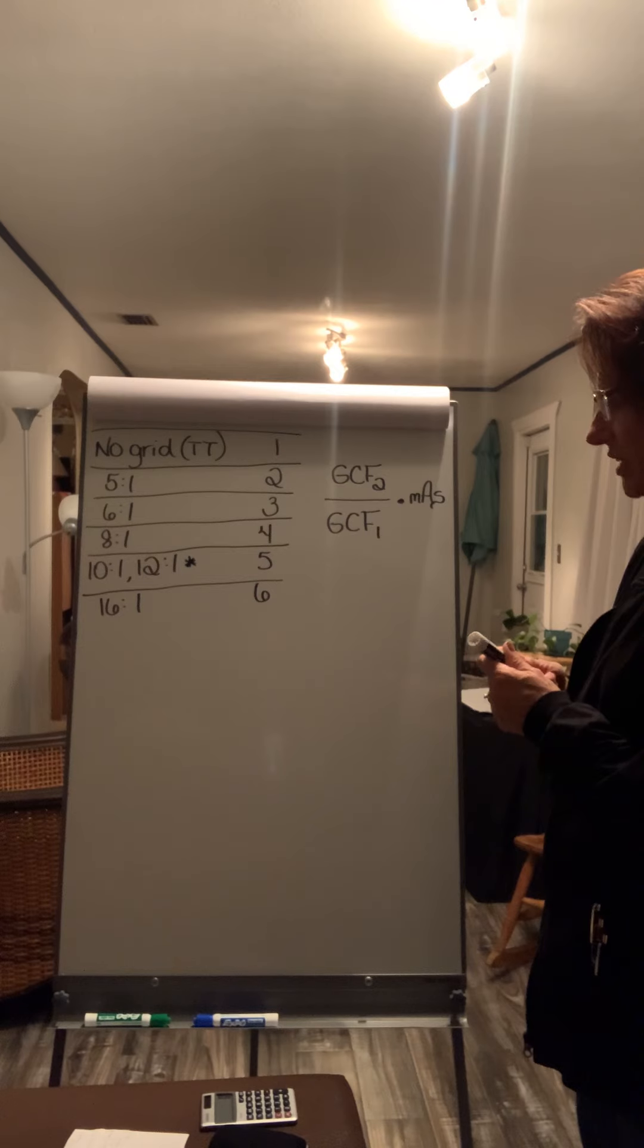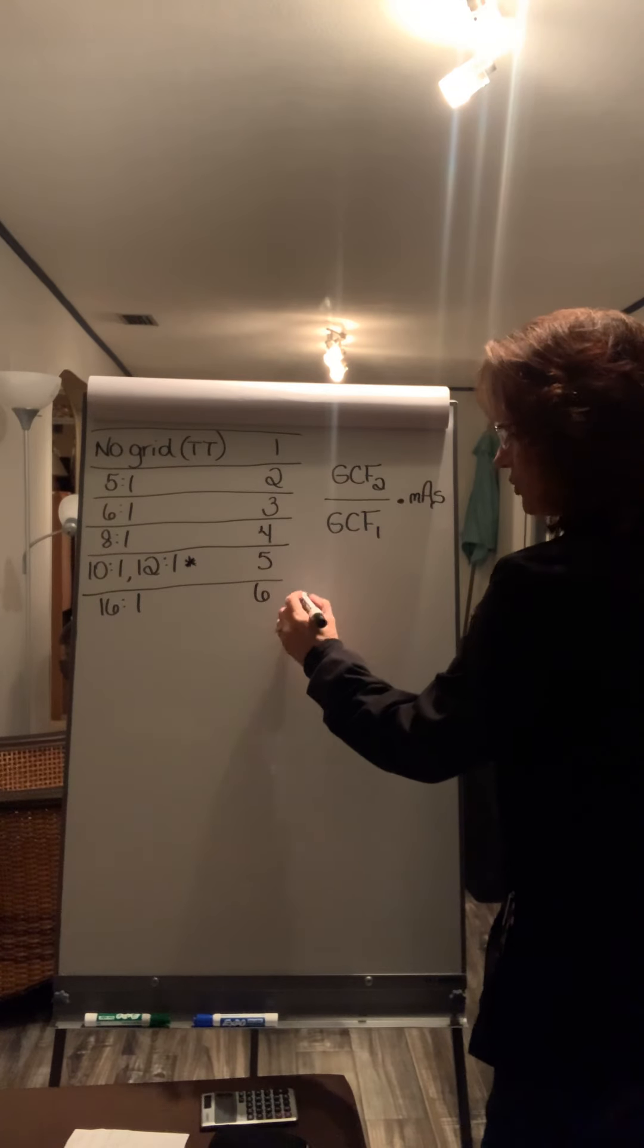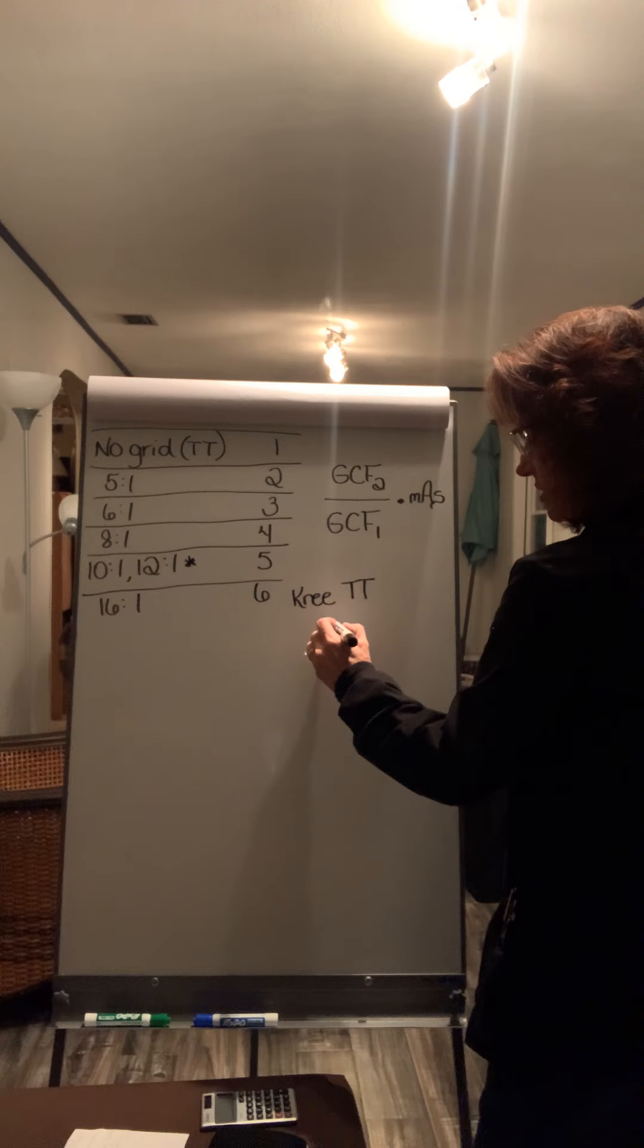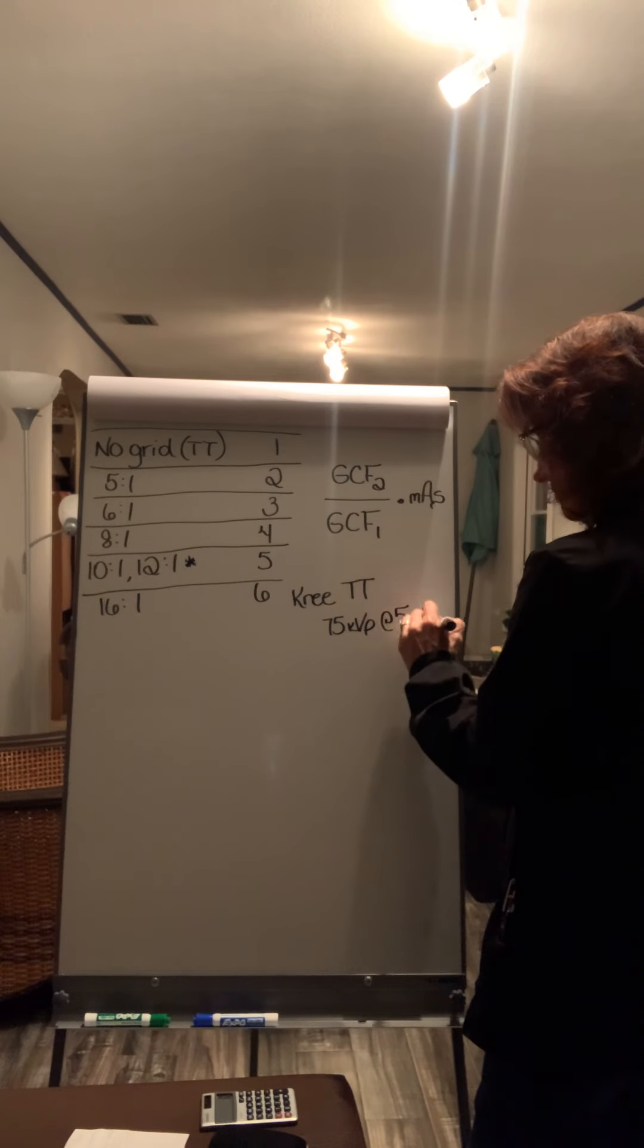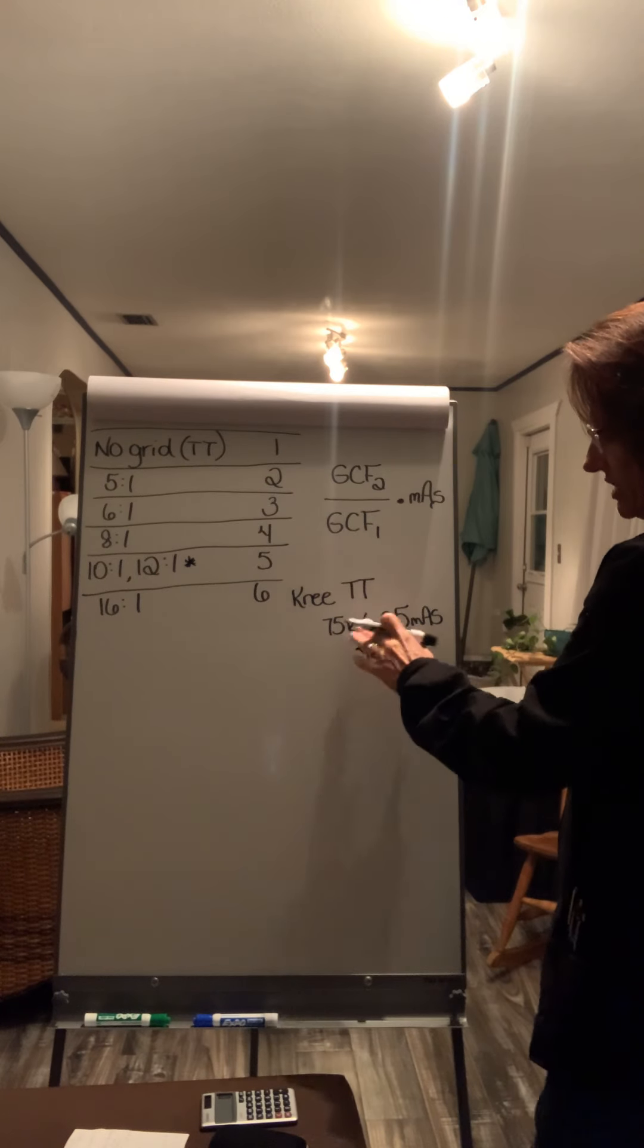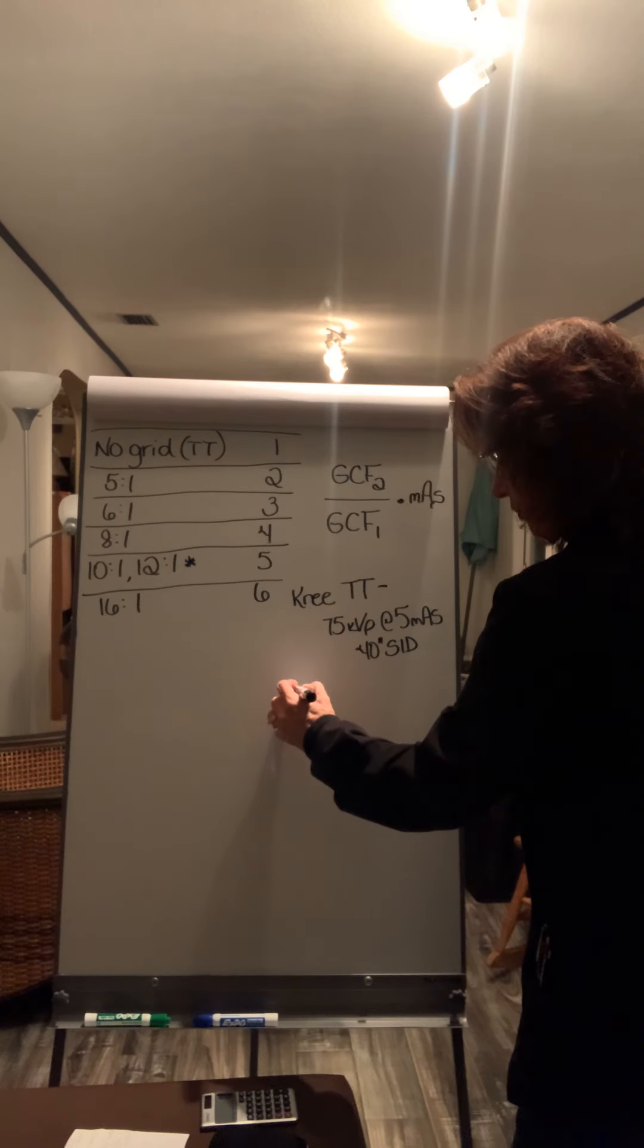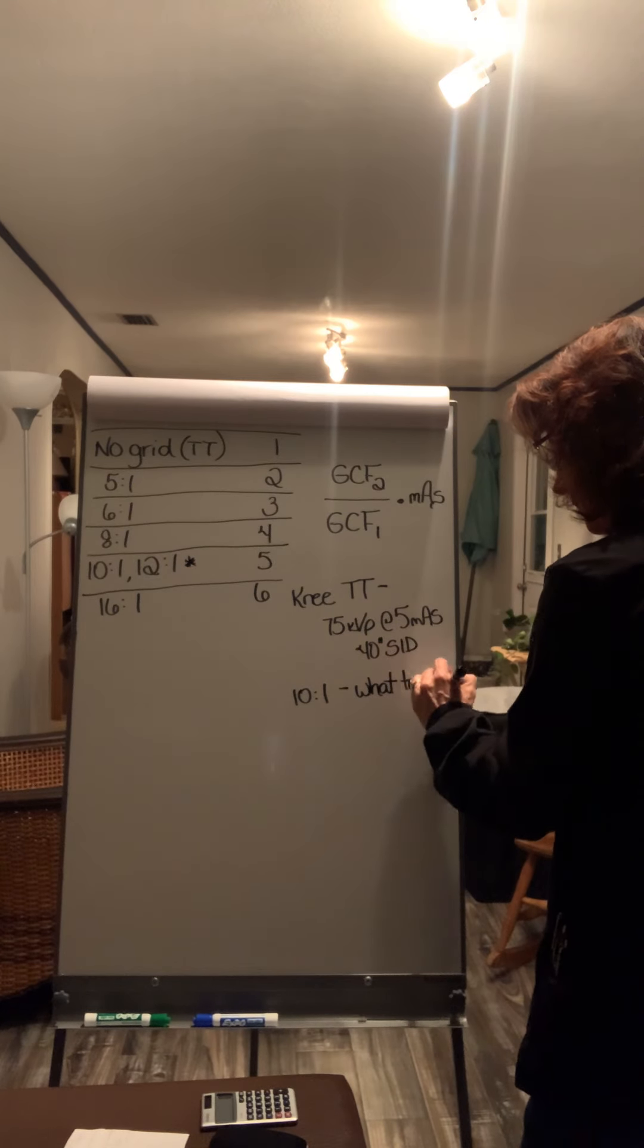So let's give you a math problem. Let's say that you did a knee tabletop and you used 75 kVp at five mAs at a 40 inch SID. Some of these numbers don't matter to us, but let's say your knee was done tabletop and you use 75 kVp five mAs at a 40 inch SID. And then the radiologist said that it looked pretty good, but he wanted you to go ahead and do it in the bucky. And in the room, your bucky was a 10 to 1 grid ratio. Now, what would you use if it was a 10 to 1 grid ratio?